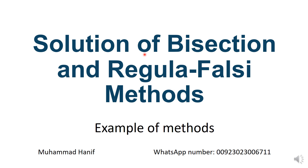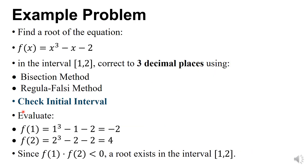Solution of bisection and regular falsi methods. Find a root of the equation f(x) = x³ - x - 2 in the interval [1, 2], correct to three decimal places, using the bisection method and regular falsi method.